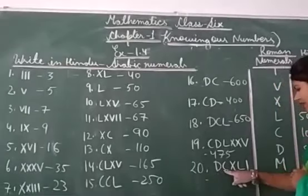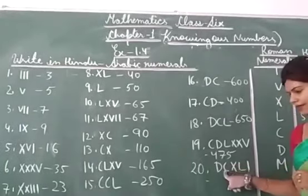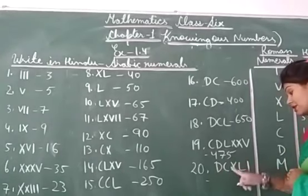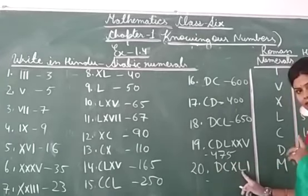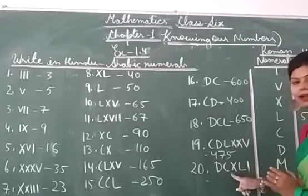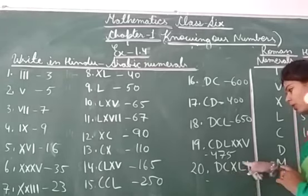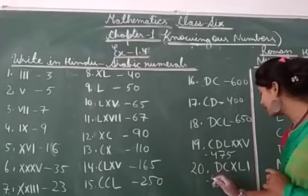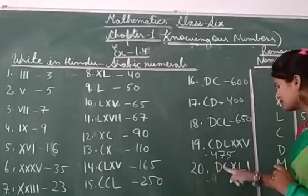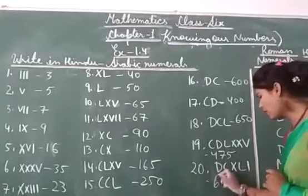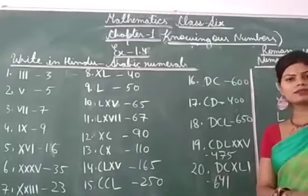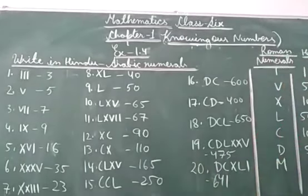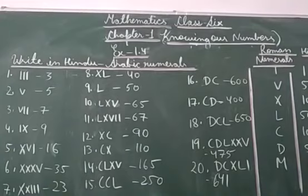So next is DCXLI: D is 500, C is 600 and 10, L is 50, so 641 is your answer. Okay, students.